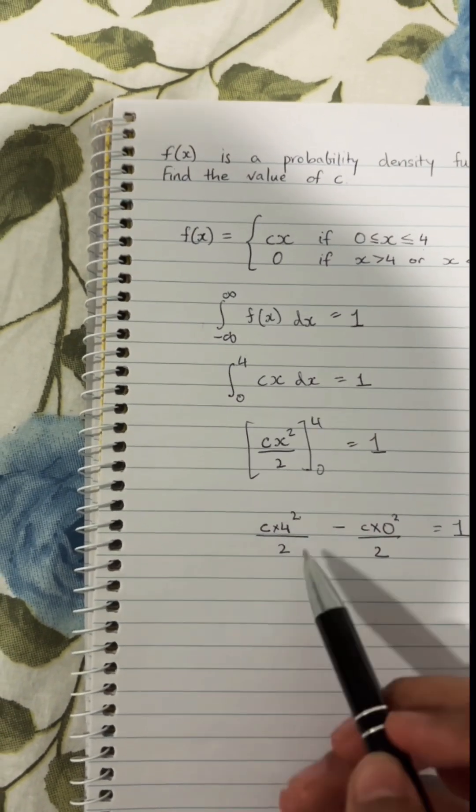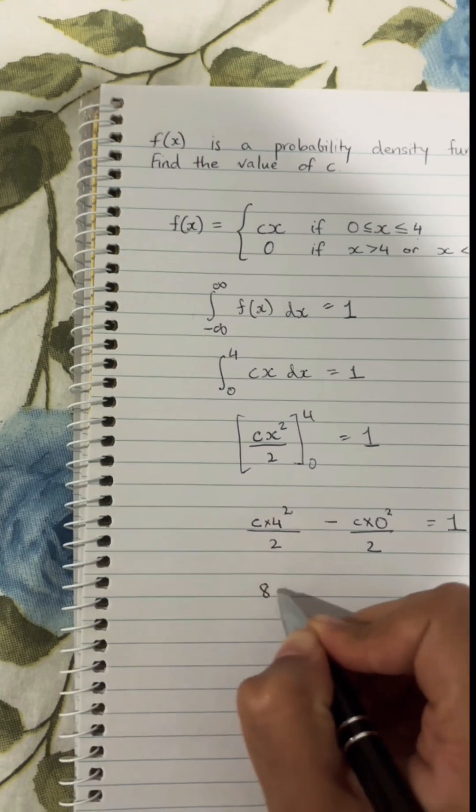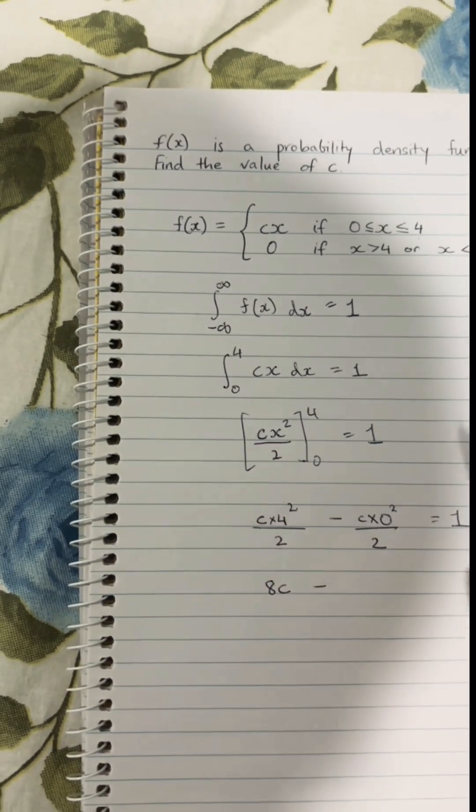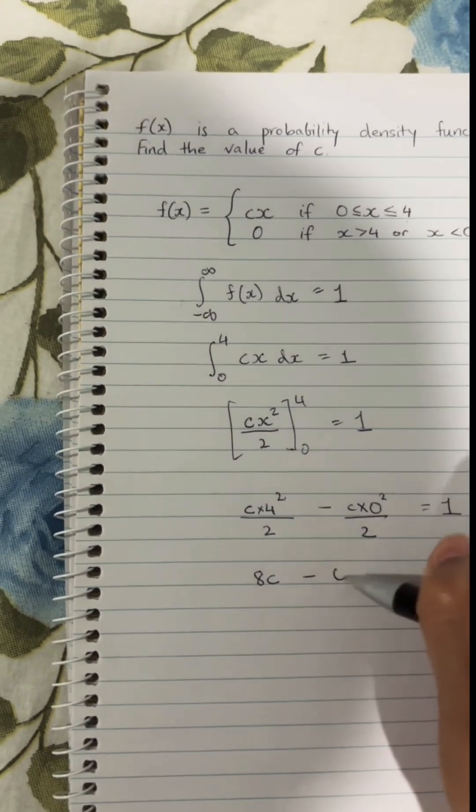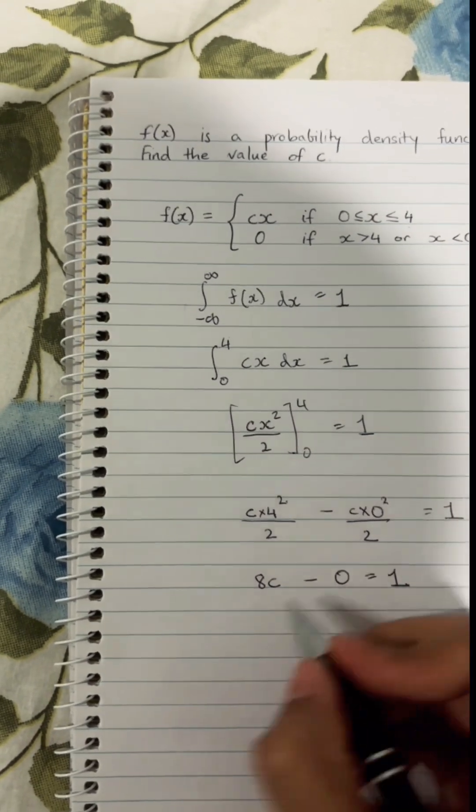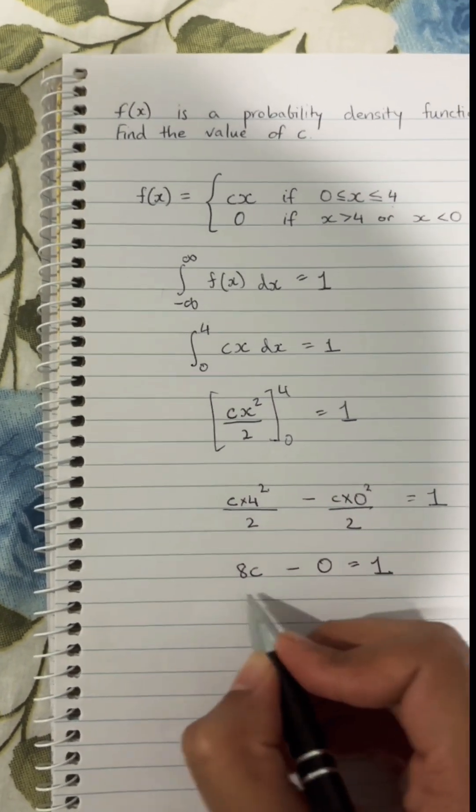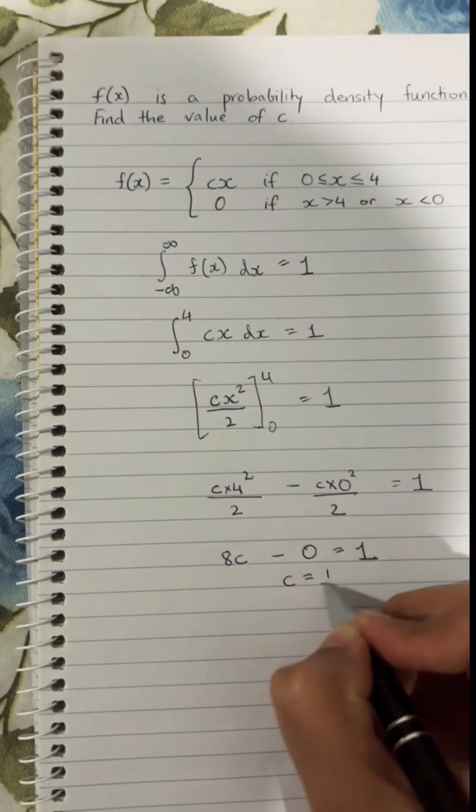Now 4 squared is 16. 16 divided by 2 gives us 8. So 8c minus, well 0 squared is just 0, so this we'll just simplify to 0 equals 1. So 8c equals 1, and dividing by 8 on both sides, we're going to get c equals 1/8.